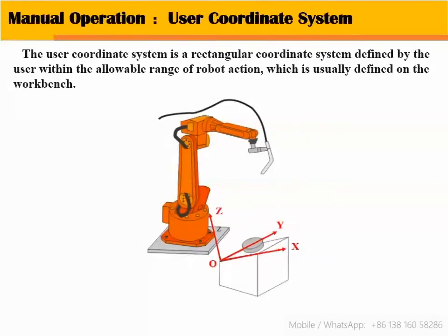A user coordinate system is a rectangular coordinate system defined by the user within the allowable range of robot action, which is usually defined on the workbench.